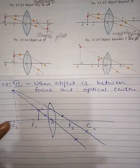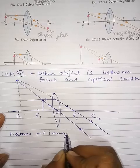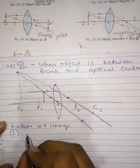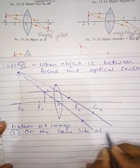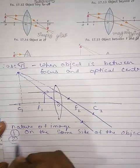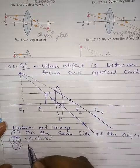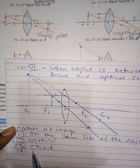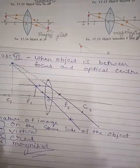दोनों light ray virtually meet किया। तो nature of image: पहला — image उसी side बना जिस side object रखा हुआ है, on the same side of the object। दूसरा — virtual बनेगा। तीसरा — erect होगा। चौथा — object से बड़ा होगा, यानी magnified। यह convex lens का sixth case हुआ।